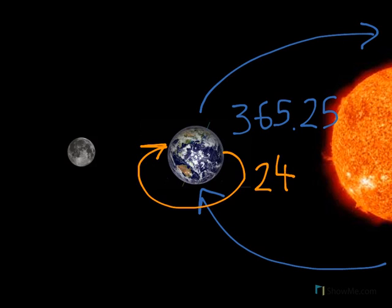We notice the Earth's rotation when we experience day and night. When the part of the Earth we are on is facing the Sun, it's daytime. And when it rotates to face away from the Sun, it becomes night.